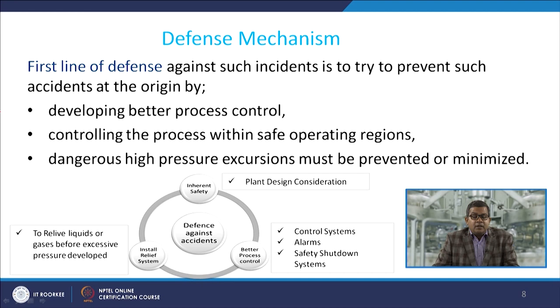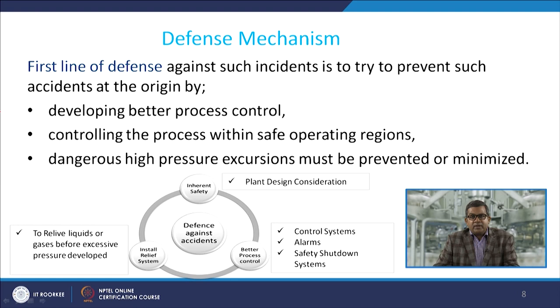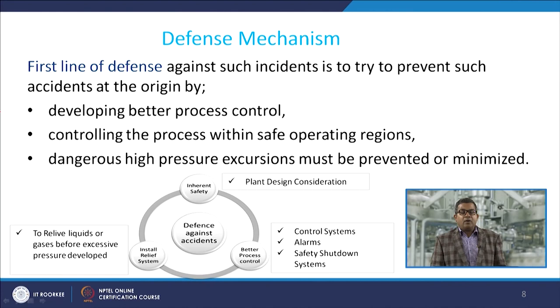The first line of defence against such incidents is to try to prevent the accident at its origin. You may develop better process control, controlling the process within the safe operating region. Every process has a safe operating region, but sometimes because of production demand or other reasons you may be in a position that violates those limits. Dangerous high-pressure excursions must be prevented or minimised.